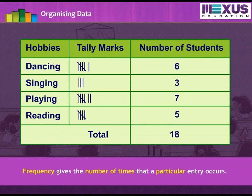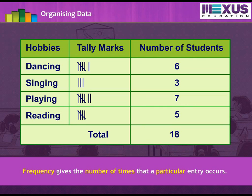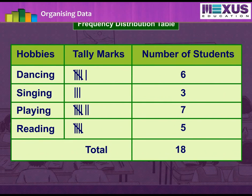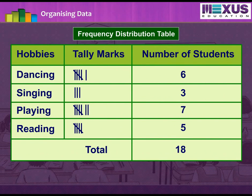Frequency gives the number of times that a particular entry occurs. The frequency of students whose hobby is dancing is 6. The table made is known as a frequency distribution table, as it gives the number of times an entry occurs.